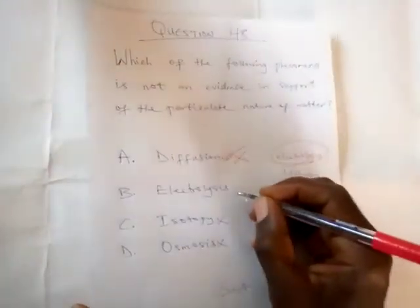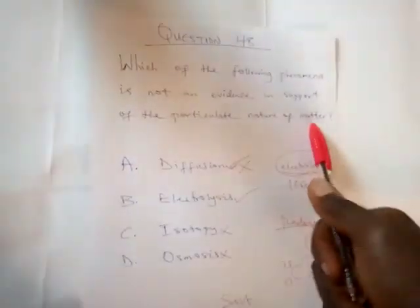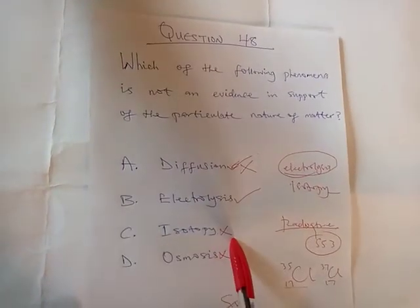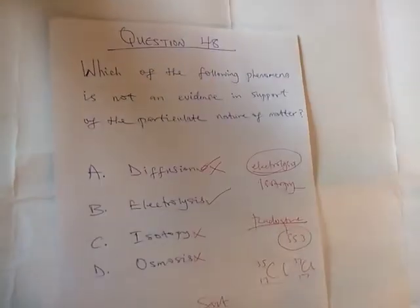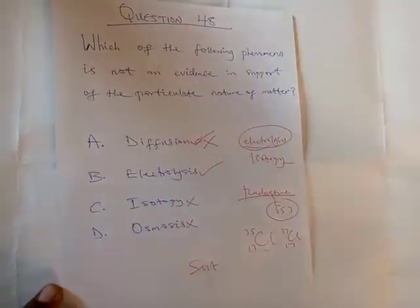So particulate nature of matter cannot account for electrolysis, a topic that you learn very well in SS2. So this is our answer. Diffusion we account for it, osmosis will account, isotopy will account. Now when Dalton's theory was modified, isotopy we are now able to account for.